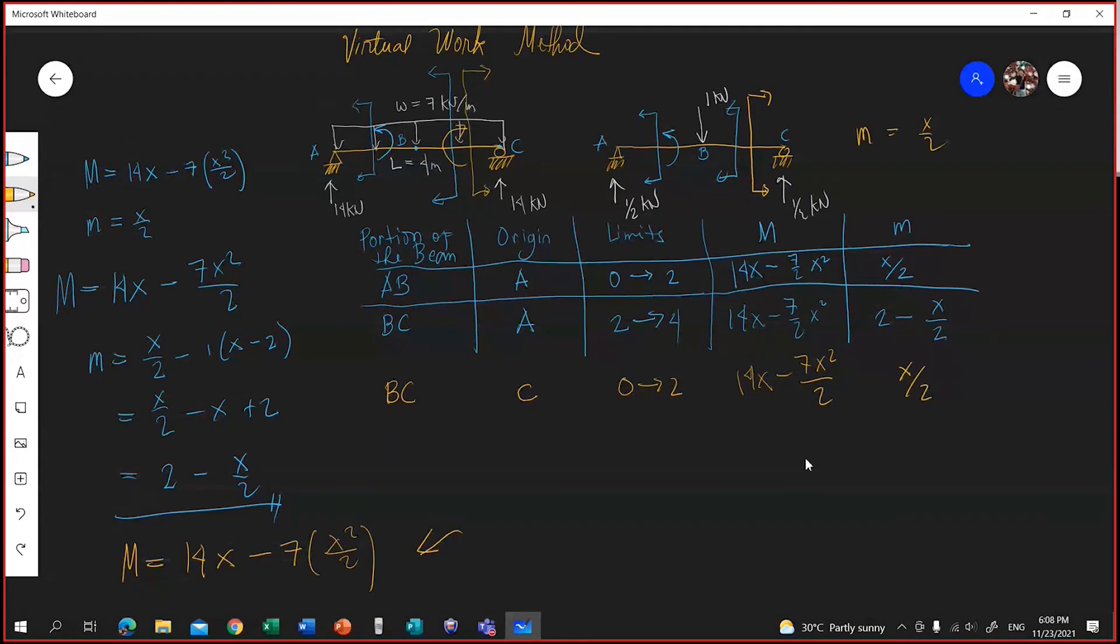Now basically your B-C here, the result should be the same. But the small letter M is different. Small letter M is 2 minus x over 2, and here it is x over 2. But what will happen with the virtual work method?